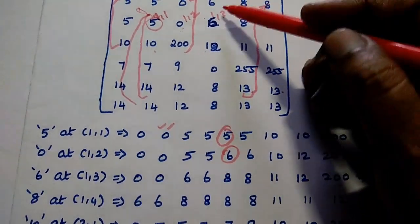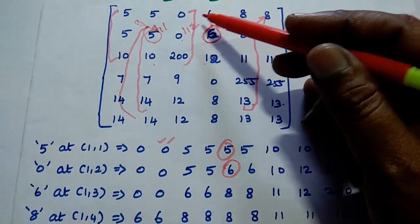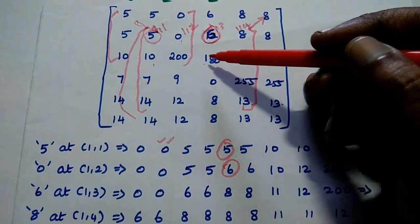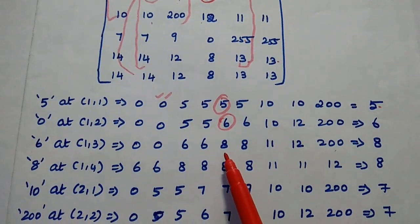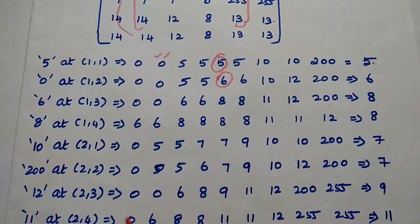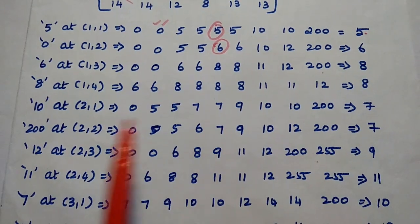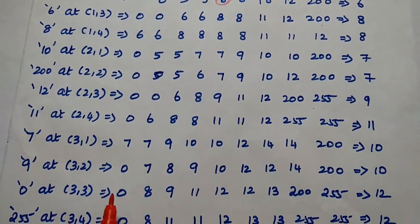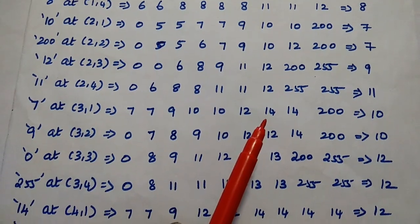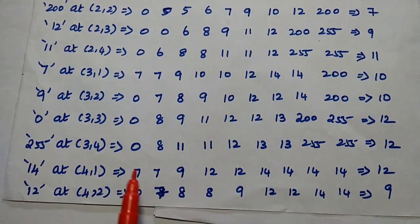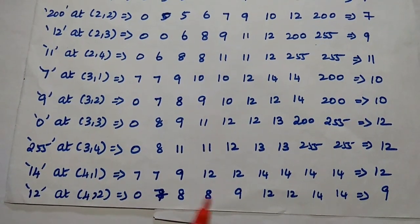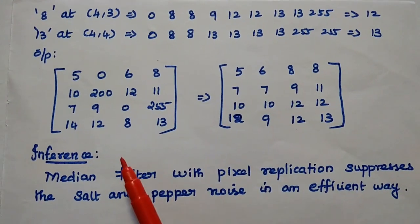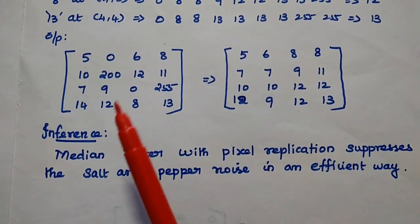Moving to the next pixel, the neighboring values are 2 zeros, 2 sixes, 2 eights, 11, 12, 200. The median value is 8. Continuing through all pixels using pixel replication: 8→8, 10→7, 200→7, 12→9, 11→11, 7→10, 9→10, 0→12, 255→12, 14→12, 12→9, 8→12, 13→13.